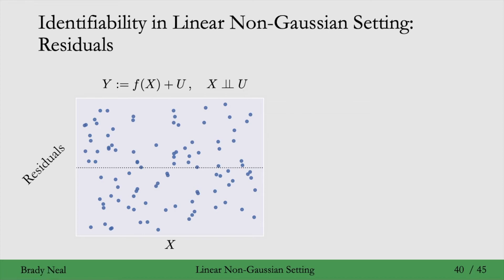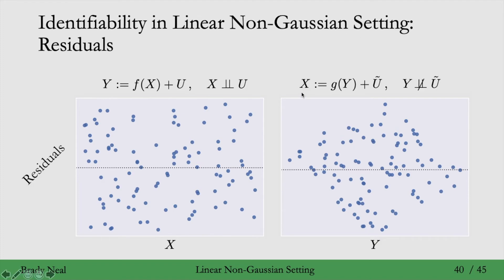But then when we look at the regression in the anti-causal direction, now here we're regressing X on Y. And now on the y-axis, we have this Ũ. And on the x-axis, we have Y now, because we want to be matching this input variable. Now we see that Y is dependent on Ũ.